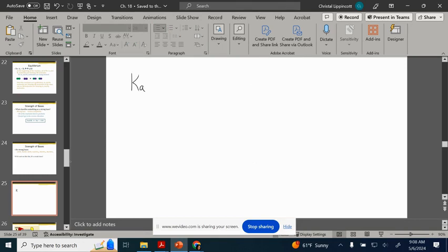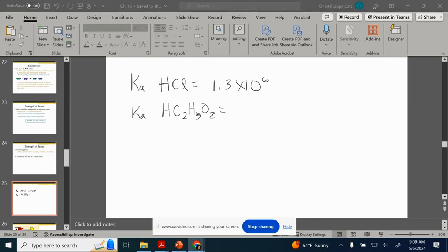Okay, so Ka value for like hydrochloric acid. Give me just a second. Let me look this up here. Okay. 1 times 10 to the 6th. 1.3 times 10 to the 6th. Okay. The Ka value of acetic acid, which is going to be a weak acid, because it's not on that list, is going to equal 1.8 times 10 to the negative 5.